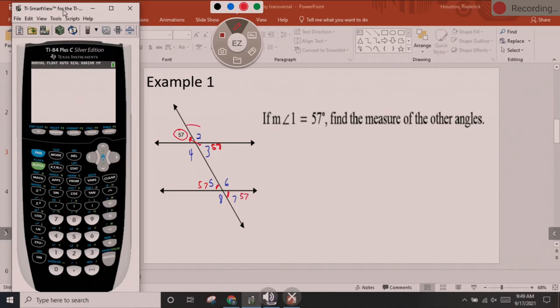And we can find angle 2, the obtuse one, by doing 180 minus 57. So I go to my calculator, I'm going to do 180 minus 57, and it gives us 123. So angle 2 is 123. So you know angle 4 is 123, angle 6 is 123, and angle 8 is 123.